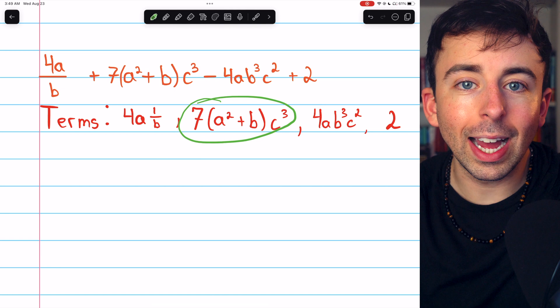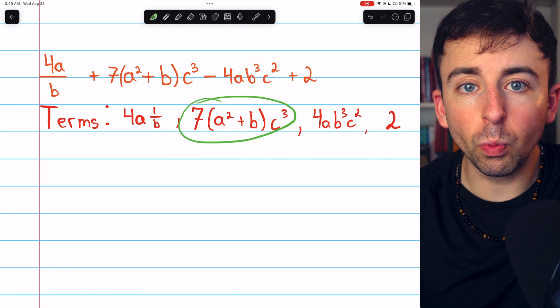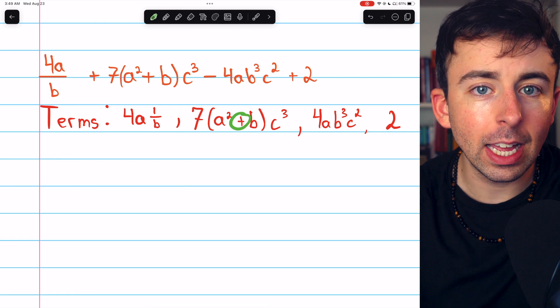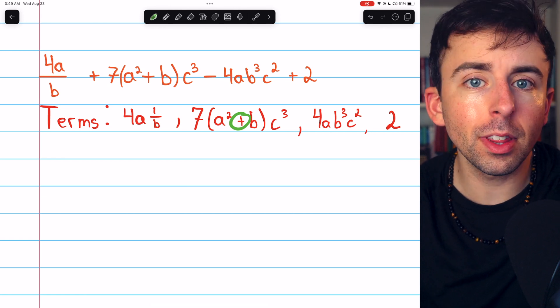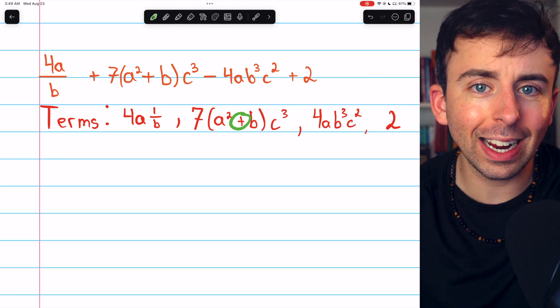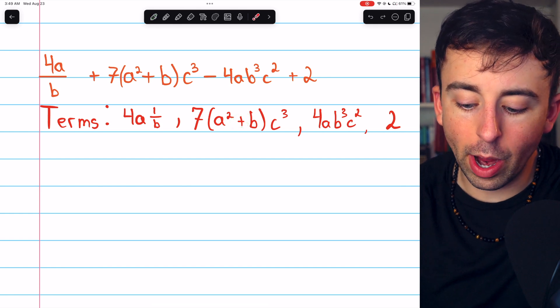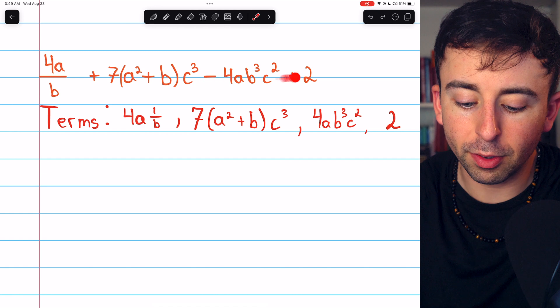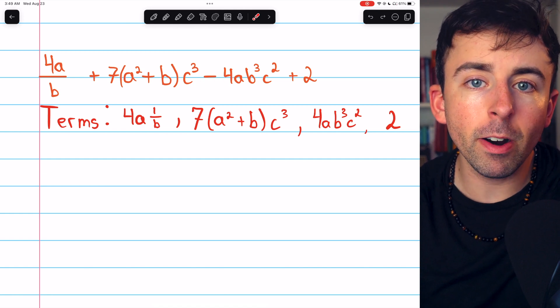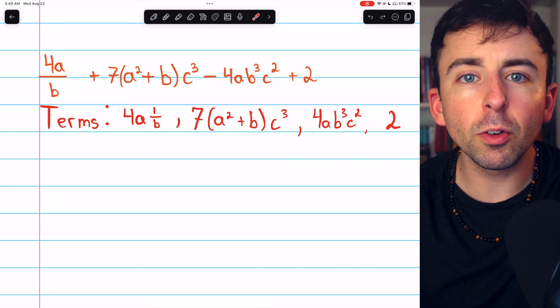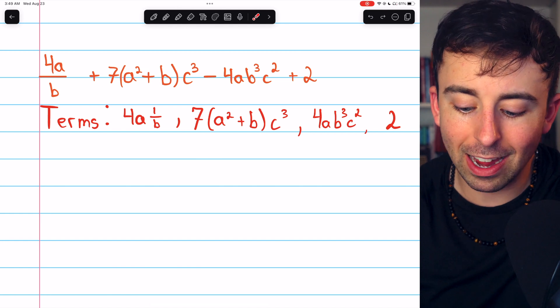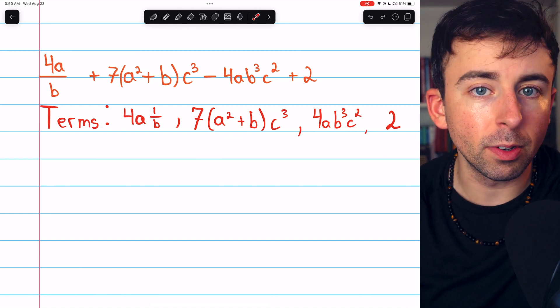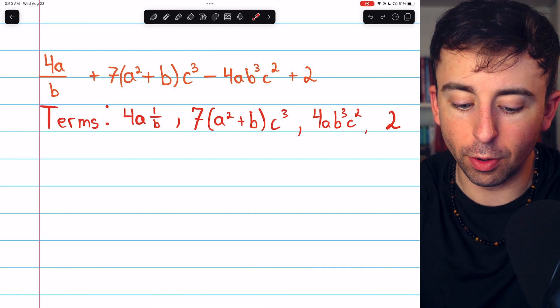And we've been saying that the terms are the things being added or subtracted. The reason that a squared and b aren't their own separate terms of this expression is because they're part of a bigger product. They're kind of trapped in a multiplication. A squared plus b is not being added or subtracted with the other terms.